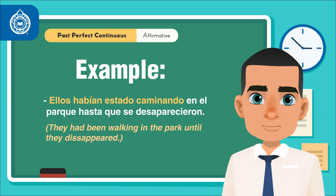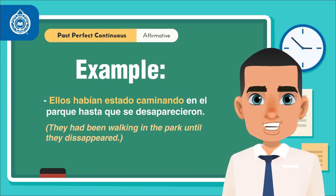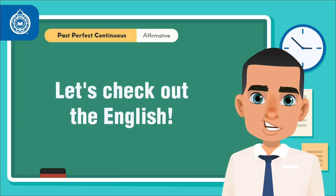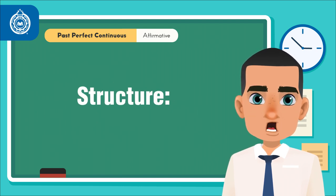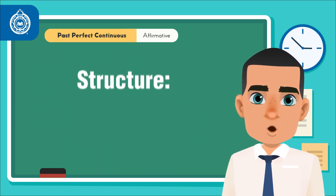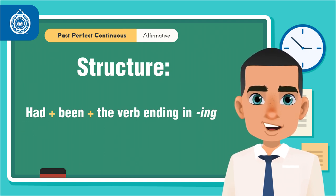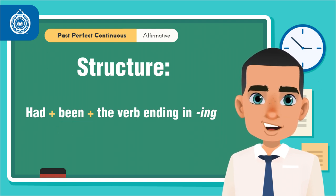Now that you have seen how to form the past perfect continuous in Spanish, let's check out the English. The structure is as follows: the word had, depending on the subject, plus been, the past participle form of to be, plus the verb ending in ing.